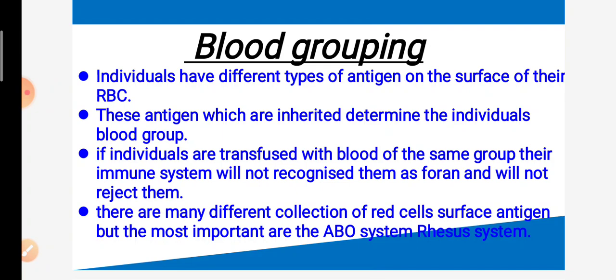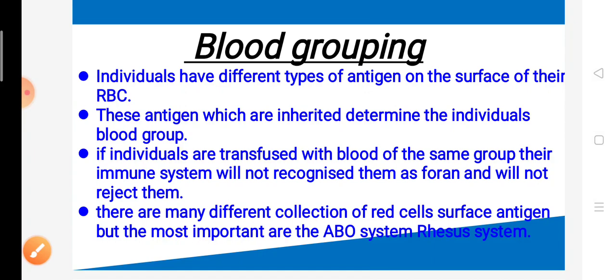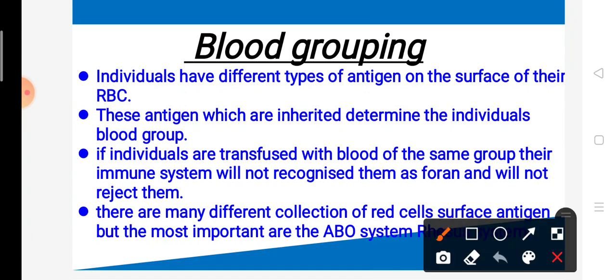First of all, individuals have different types of antigen on the surface of their RBC. These antigens which are inherited determine the individual's blood group. These antigens are genetic, meaning they come from our parents. This is a genetic blood group.